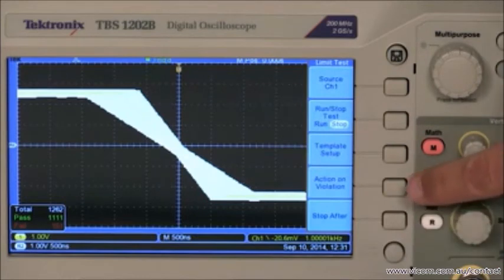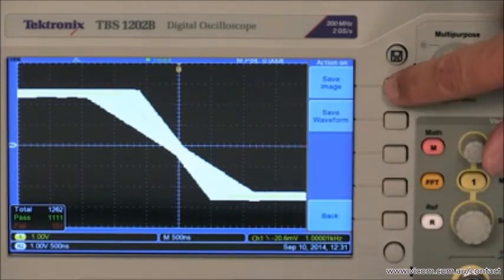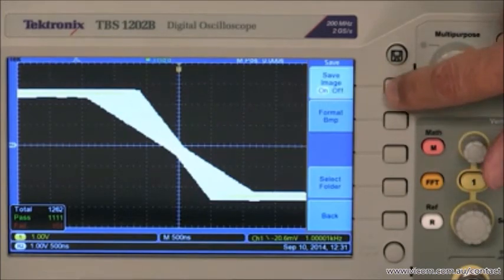If a failure is detected, you can specify what action should be taken. By selecting action on violations, you can choose to save the waveform, save the image, or to do nothing.